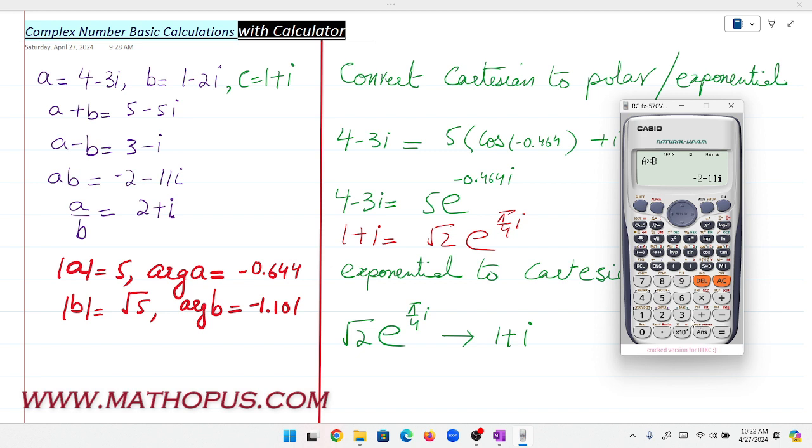Similarly, now let's do division: A over B. After division, we have 2+i.